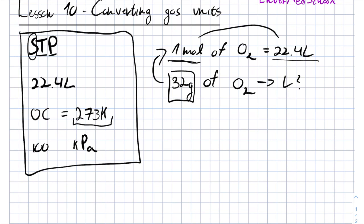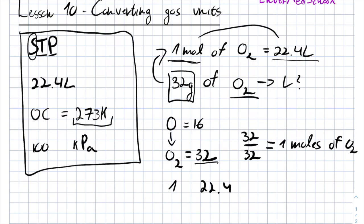So using the periodic table, we can see that oxygen equals 16. Molecular oxygen equals 32 because we have two oxygen in the molecule. If we have 32 grams of oxygen and we know the molecular weight of molecular oxygen is 32, you can divide them by each other to get the number of moles of oxygen. And when you have one mole, we know we have 22.4 liters of molecular oxygen.